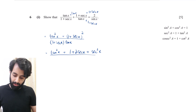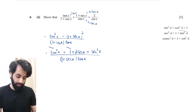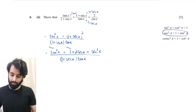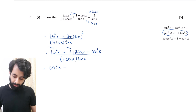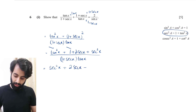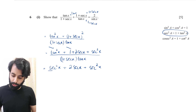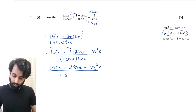The denominator becomes (1 + sec x) times tan x. In the numerator, we can see tan squared x + 1. Using the identity 1 + tan²x = sec²x, I replace tan squared x + 1 with sec squared x. So the numerator becomes sec²x + 2 sec x + sec²x, and the denominator stays as (1 + sec x) times tan x. Make sure to show every single step — don't skip steps.